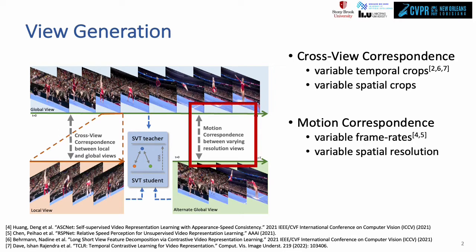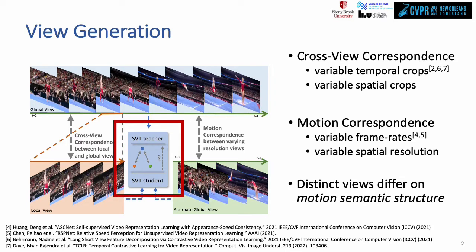Motion refers to variable frame rates, which is coupled with variable spatial resolution to maintain fixed compute costs. These distinct views differ on the semantic structure of actions across space-time, which is used as the self-supervision signal.